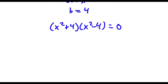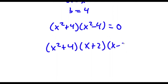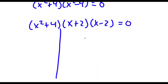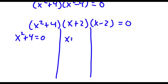Now x squared minus 4 factors further as x plus 2 times x minus 2. So now I have three factors set equal to zero: x squared plus 4 equals 0, x plus 2 equals 0, and x minus 2 equals 0.